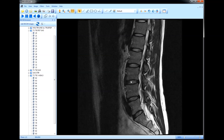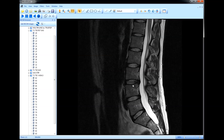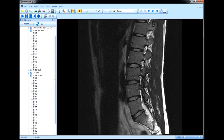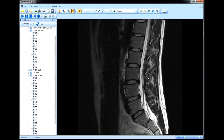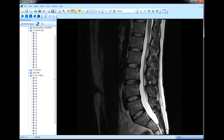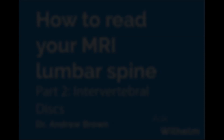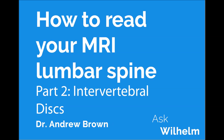Discs can also herniate in the perpendicular direction — up or down — and these are called Schmorl's nodes, which are quite common as well. They are often identified in asymptomatic patients without pain, but can also occur in the context of infection or previous trauma. In this video we talked about how to count vertebrae and how to examine intervertebral discs. In the next video we will talk about facet joints and facet arthropathy. For more information, check out the link below to our blog at askwillem.com. I'm Andrew Brown — see you next time.